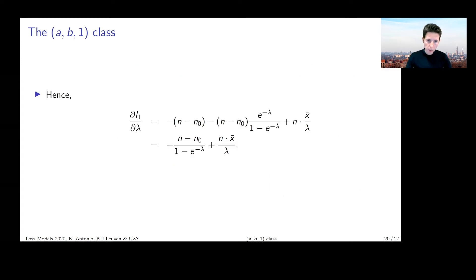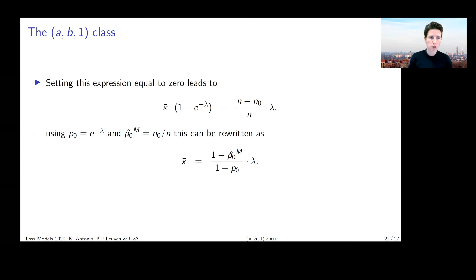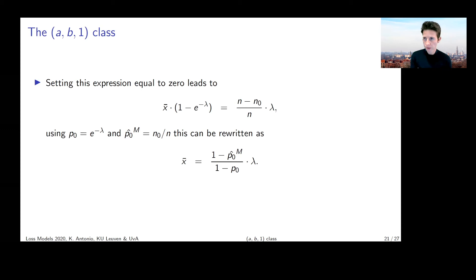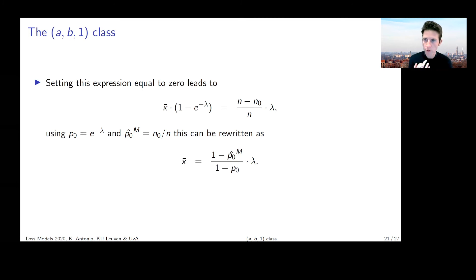You can do that either numerically or try to work it out analytically. Under certain considerations you see that eventually we end up with an expression relating the unknown λ, the sample mean x-bar, p_zero from the original count model, and the modified probability at zero p_zero^m — which we're able to calibrate with the MLE we just derived. This gives intuition about what λ will look like, but you would need to solve it numerically.